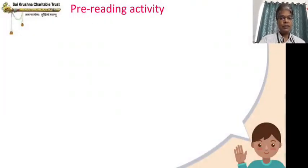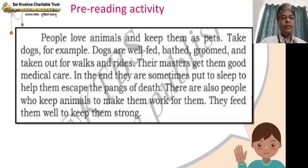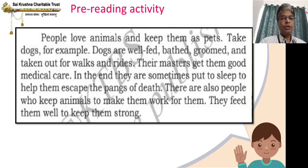Let us now move forward to the pre-reading activity. Before the story, we will also discuss about the author, and subsequently we are going to do a pre-reading activity. People love animals and keep them as pets. Take dogs, for example — dogs are well-fed, bathed, groomed, and taken out for walks and rides. Their masters get them good medical care. In the end, they are sometimes put to sleep to help them escape the pangs of death. There are also people who keep animals to make them work. Two vocabulary words: groomed means brushed and cleaned the body; pangs means sharp pains.